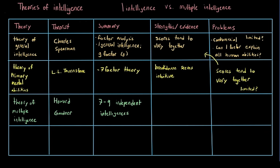Gardner predicted a logical-mathematical intelligence, a linguistic intelligence, a musical intelligence, a spatial intelligence, a body-kinesthetic intelligence, an intrapersonal intelligence, and an interpersonal intelligence. Later on, he added the idea of a naturalist intelligence as well as an existential intelligence.